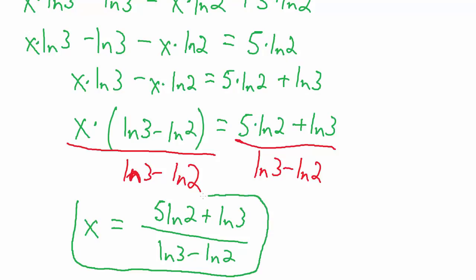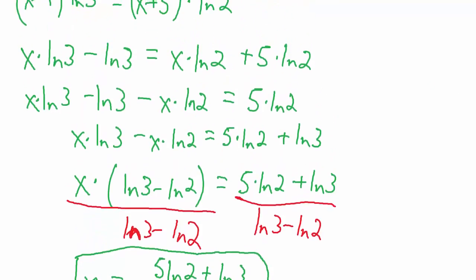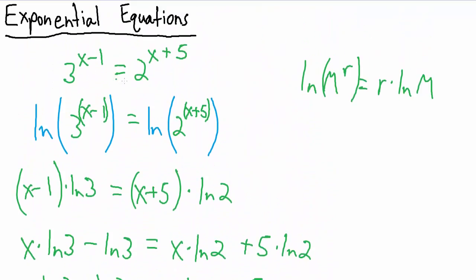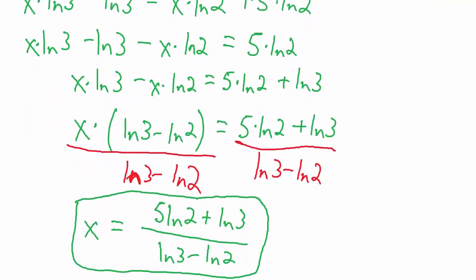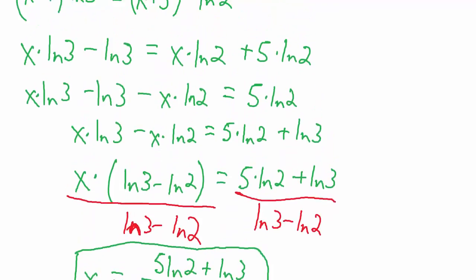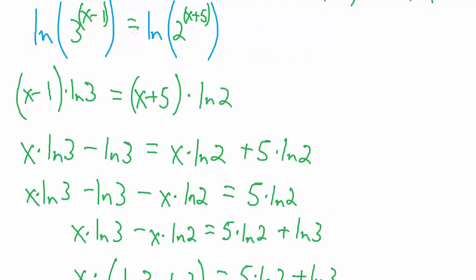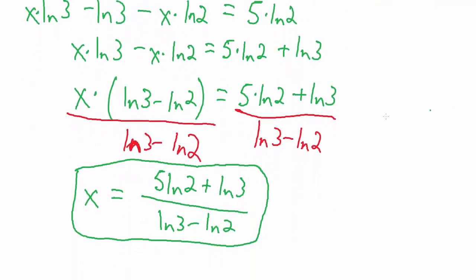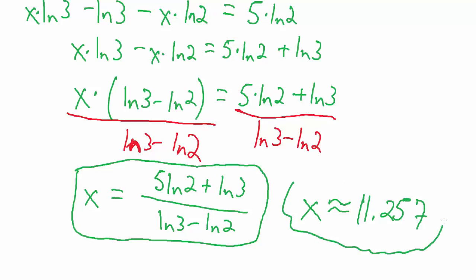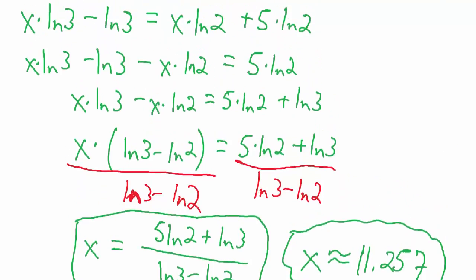This is quite a bit more complicated than previous examples because we started with two different bases that cannot be expressed nicely in terms of each other. Because we took natural logs rather than base 2 or base 3 logs, we can easily plug this into a calculator. If we need an approximate value, x is approximately equal to 11.257. And that's another example of solving an exponential equation.